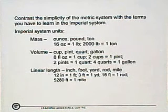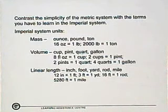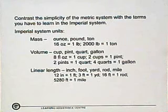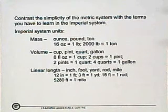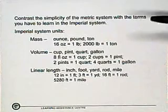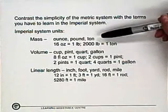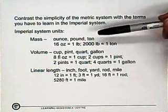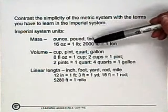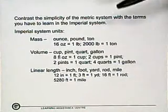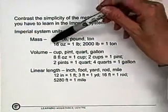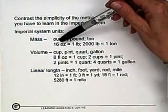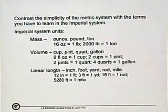Now think for a minute about how simple the metric system is with everything being multiplied and divided by ten, and powers of ten, and compare that with what you have to learn to work in the imperial system. The imperial system units, which many of us grew up with, have a number of different types of units. For mass, we measure in ounces, pounds, and tons. Sixteen ounces equals one pound. Two thousand pounds equals one ton. There's no sort of uniformity, or predictability even, among the numbers, the factors that are used to convert units.